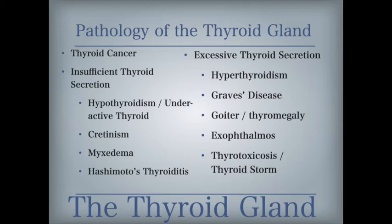Excessive thyroid secretion includes hyperthyroidism, a condition of excessive thyroid hormones in the blood, with symptoms including an increased metabolic rate, increased sweating, nervousness, and weight loss. Graves' disease is an autoimmune disorder characterized by hyperthyroidism, goiter, and exophthalmos. Goiter, also commonly known as thyromegaly, is an abnormal enlargement of the thyroid gland that produces a swelling in the front part of the neck. Exophthalmos is an abnormal protrusion of the eyes. Thyrotoxicosis, also known as thyroid storm, is a life-threatening condition resulting from the release of excessive quantities of thyroid hormones into the bloodstream.